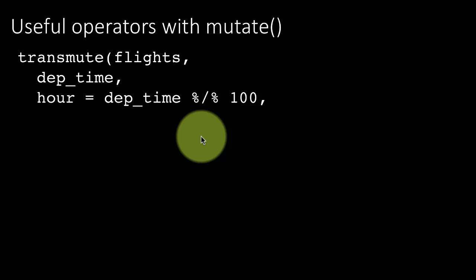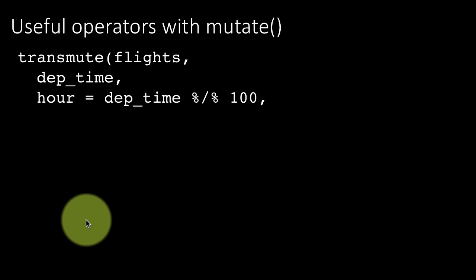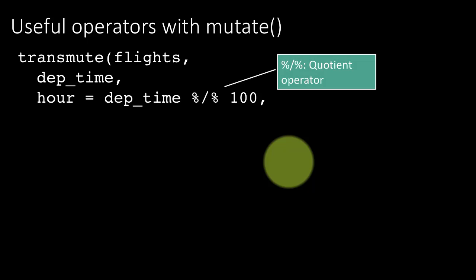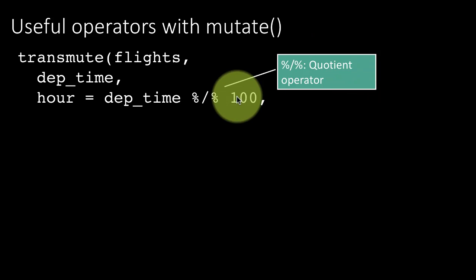Now this is not just the regular division operation. Percent slash percent is the integer division operation which gets you the quotient. That is, you're completely ignoring the remainder and seeing how many times it goes in. So that's the quotient operator.